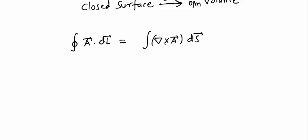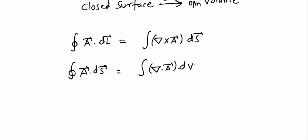Next, the divergence theorem: ∮A·dS over a closed surface equals ∫(∇·A)dV over an open volume. This is also called the Gauss divergence theorem. These two theorems are very important.